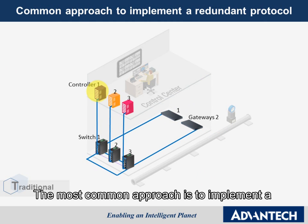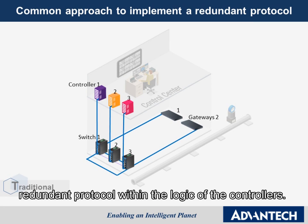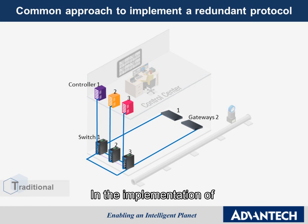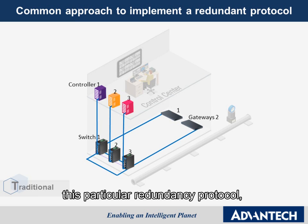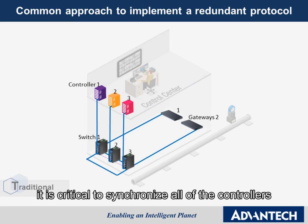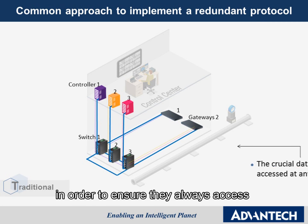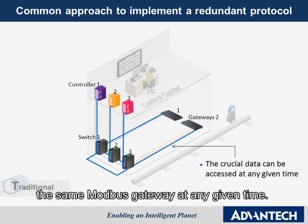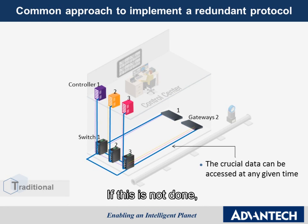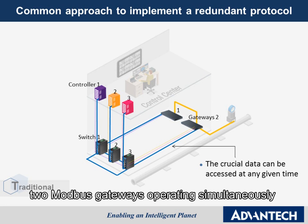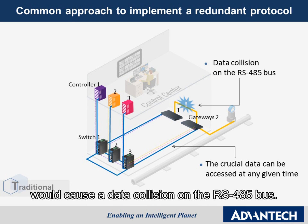The most common approach is to implement a redundant protocol within the logic of the controllers. In the implementation of this particular redundancy protocol, it is critical to synchronize all of the controllers in order to ensure they always access the same MOBA's gateway at any given time. If this is not done, two MOBA's gateways operating simultaneously would cause a data collision on the RS-485 bus.